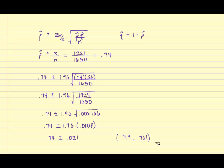So this tells us that we are 95% confident that the true population proportion of freshmen who will return to college the next year is between 0.719 and 0.761.